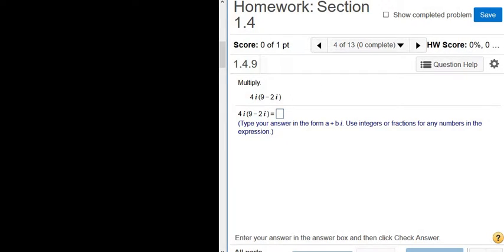Multiply. We have 4i times 9 minus 2i. All we have to do is multiply and write our answer in the form a plus bi. So we just distribute the 4i.